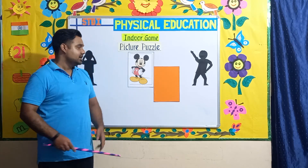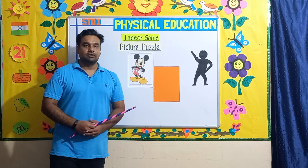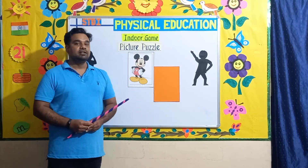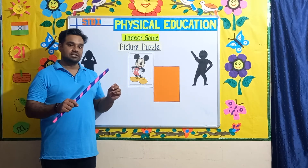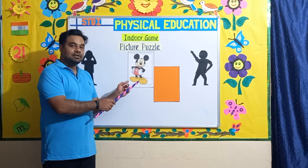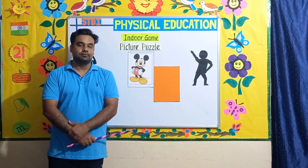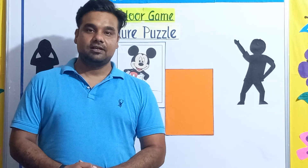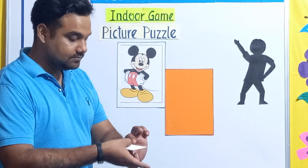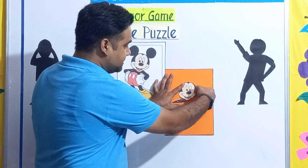Tell your parents to prepare a picture for you — they can use an old magazine or a newspaper, or you can purchase a picture from the shop. Once you get the picture, tell your parents to cut it into pieces — many pieces. It's your job to put the pieces together. I'm going to play picture puzzle and show you now. I'm going to put the first part — see, this is Mickey Mouse's face.